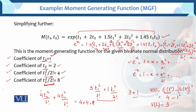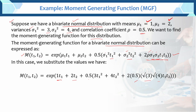For the variance of t2: coefficient of t2²/2! = 8, so E[t2²] = 8. E[t2] = μ2 = 2, so Var(t2) = 8 − 2² = 8 − 4 = 4. Recall σ2² = 4 — our result matches.